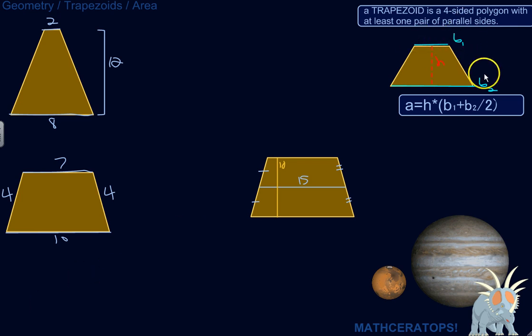The parallel sides are called bases, so base 1, base 2. A lot of times they're going to be different lengths. If they're the same length, then it would be a parallelogram. But if you're dealing with trapezoid problems, usually the bases are going to have different lengths. So what this means is the height, which is the distance between the two bases, between the two parallel sides, times the average of the base lengths.